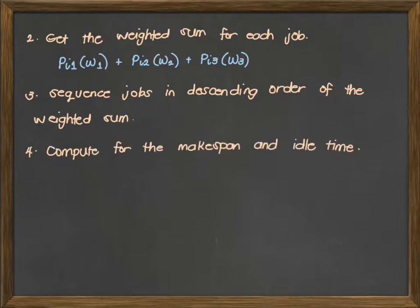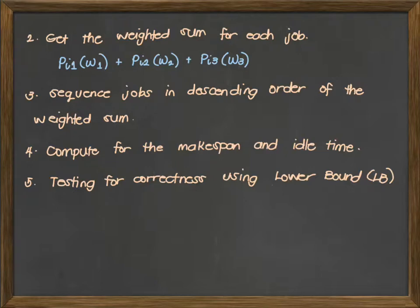Fourth is to compute for the makespan and the idle time, the usual method we've been doing. And we'll introduce another new procedure, which is to test for the correctness using lower bound. This is the simpler way of checking the optimal value. We have a much more advanced technique which is the branch and bound, but this video is only limited to the lower bound technique for our optimality test.